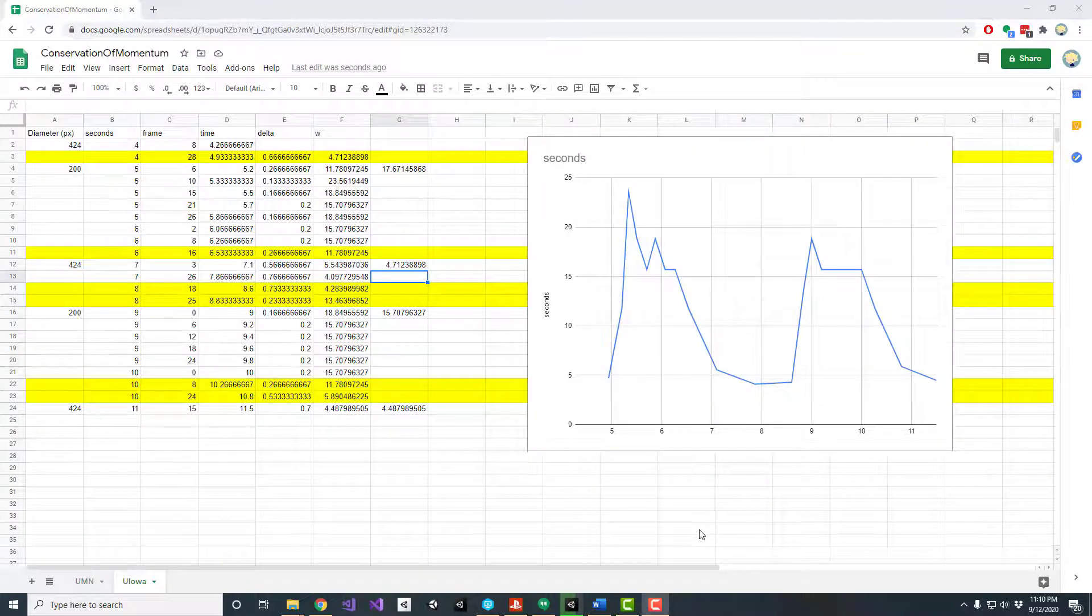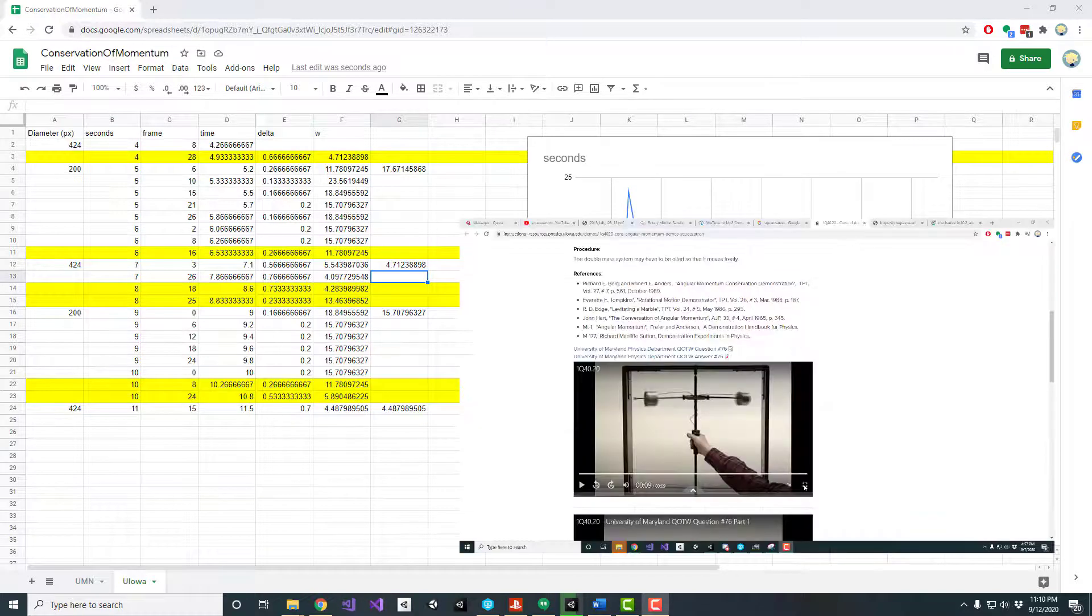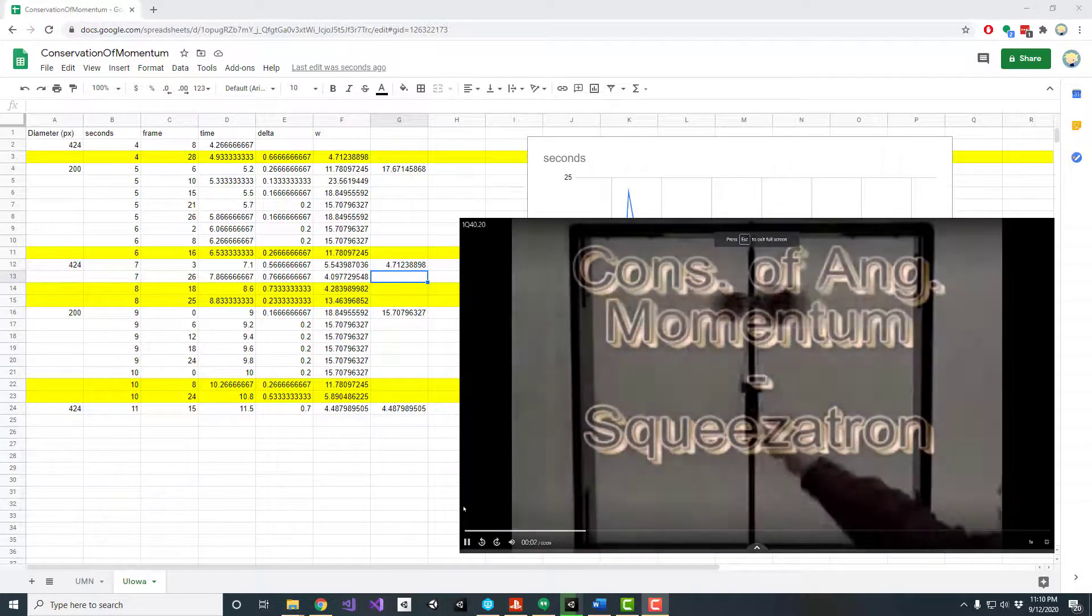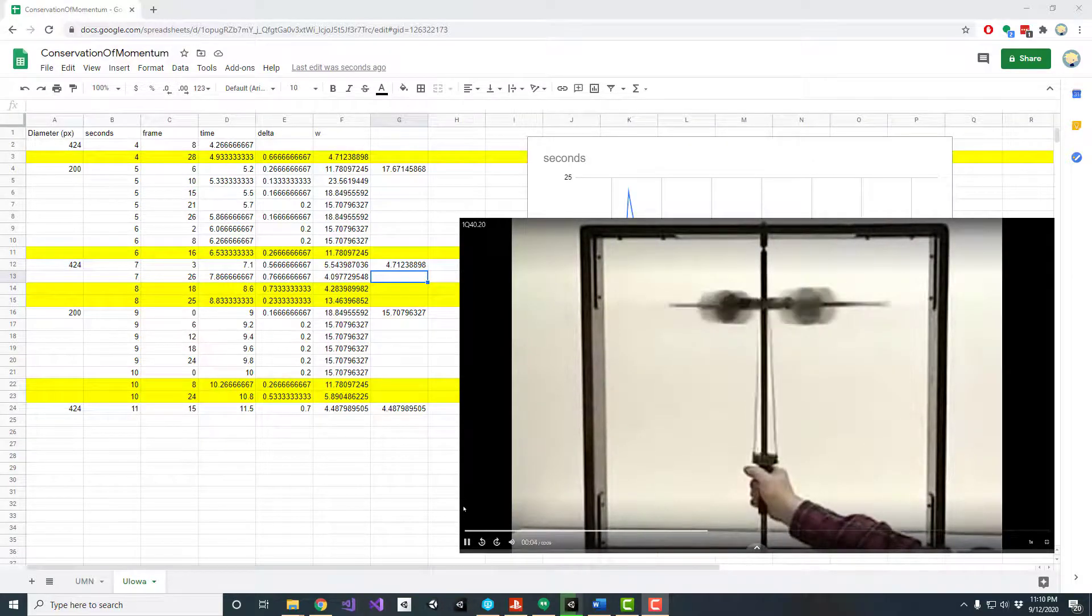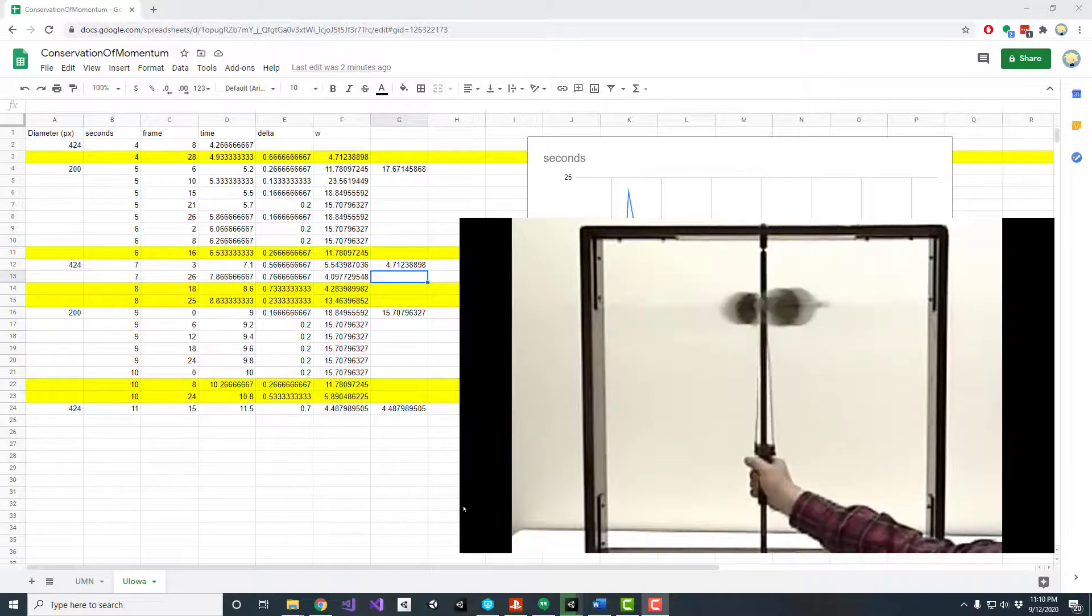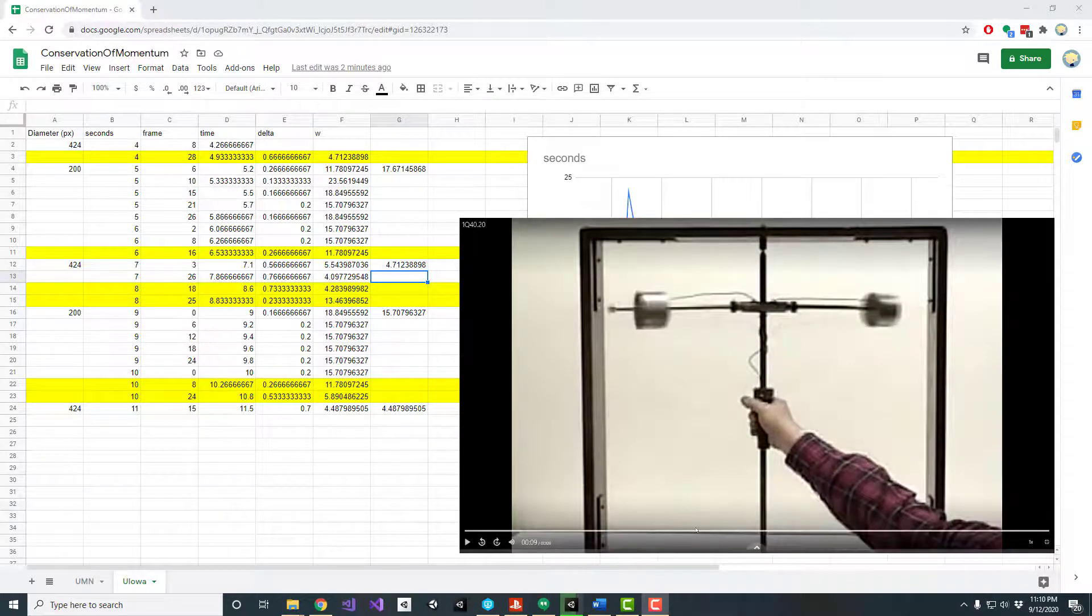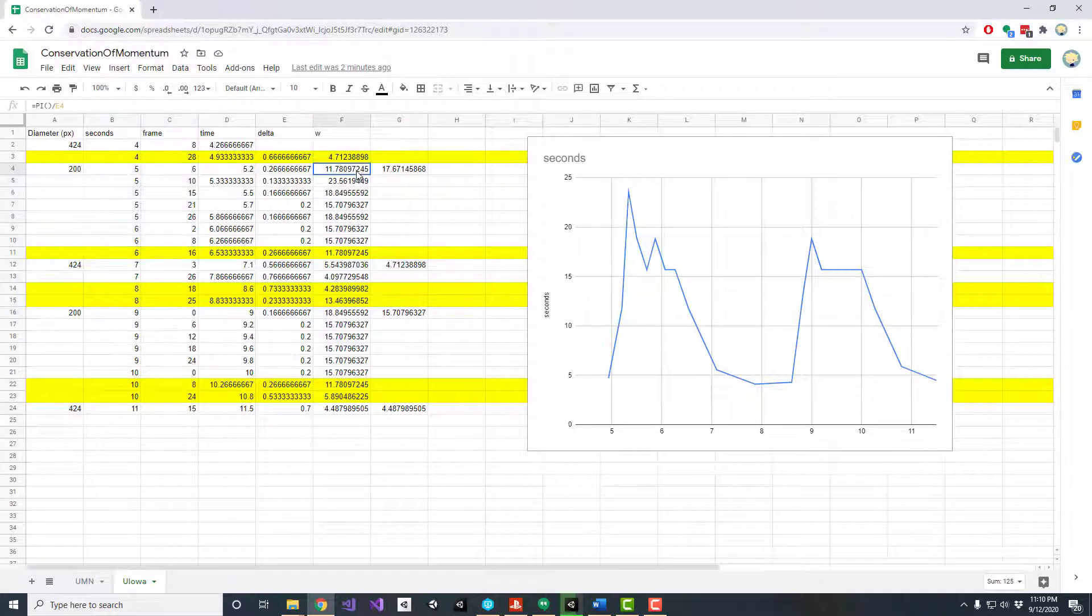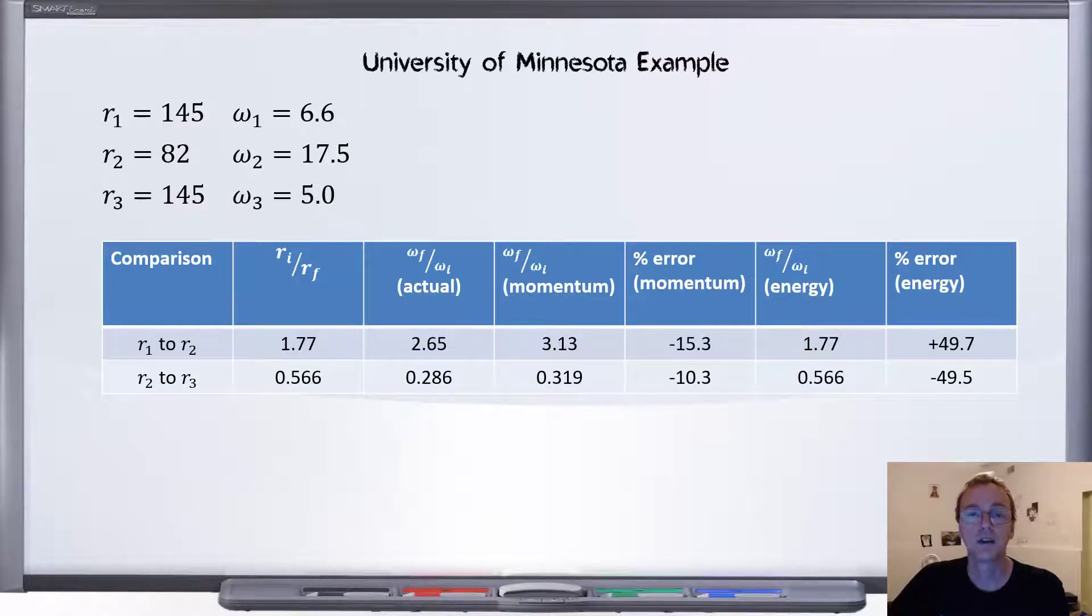Next, let's look at the University of Iowa's example. This time, we start with the radius wide again. The researcher pulls to reduce the radius, lets it extend back to wide, back to small again, and one more time back to wide. I've done the same thing, where I've used the video to record the frames. And from that, I can calculate the angular speed as measured from the video. And now the final results.